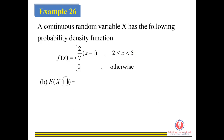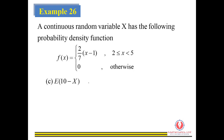To find E(X+1), we write it as E(X) plus E(1). E(1) is actually equal to 1, since any constant equals that number. So we take the answer from the previous calculation and get the result.